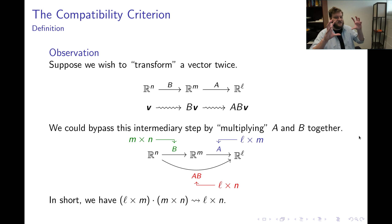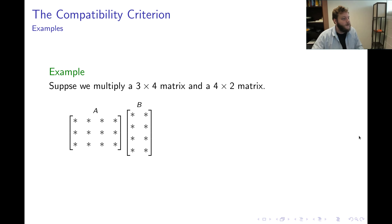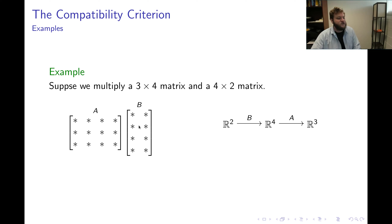This is the size issue — it doesn't even tell us how to multiply matrices together, but it sets up the compatibility criteria. Here's an archetypical example to illustrate size. Let's say I want to take a 3 by 4 matrix A and multiply it on the right by a 4 by 2 matrix B. Let's ask ourselves if this is even allowed.